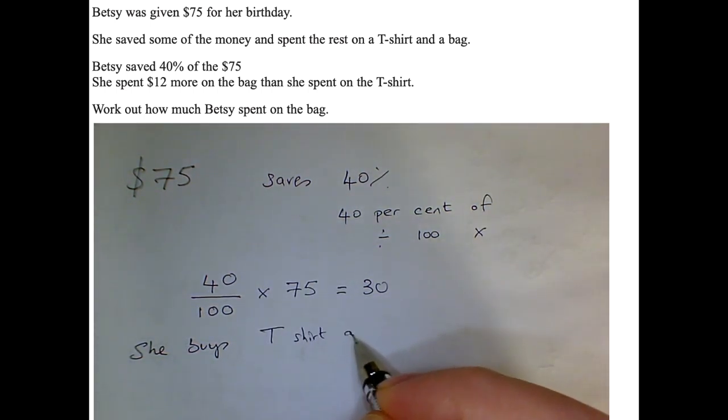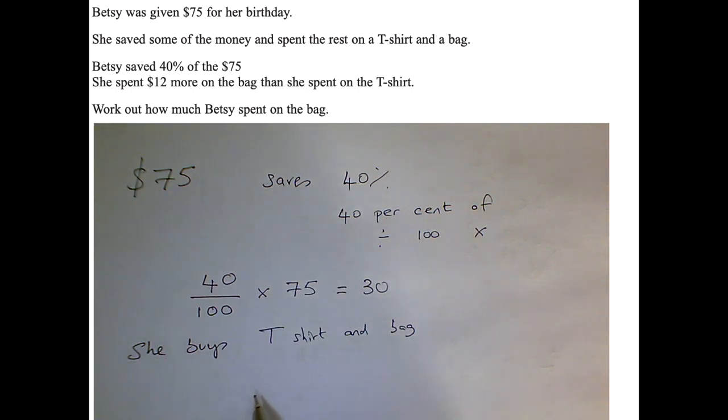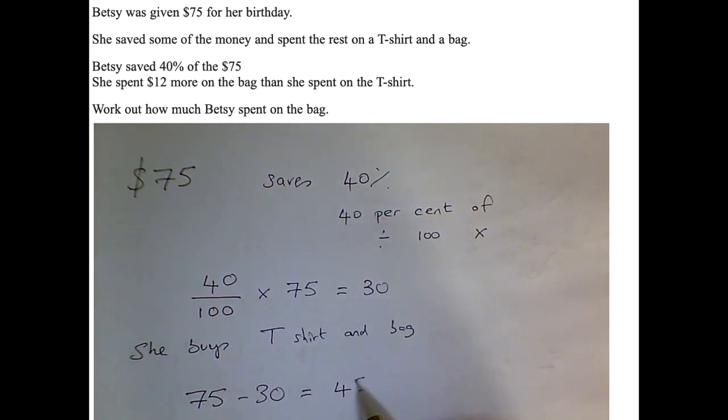So she buys a t-shirt, and a bag, and the bag is $12 more than the t-shirt. So let's just quickly work out how much she's going to spend. So 75 take away the 30 she's saving, leaves her with $45 to pay with.